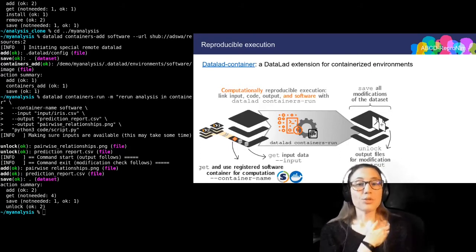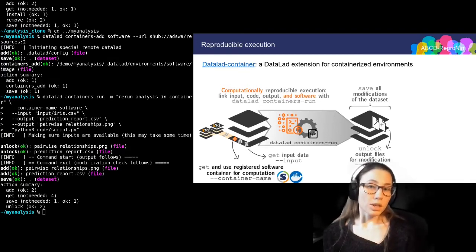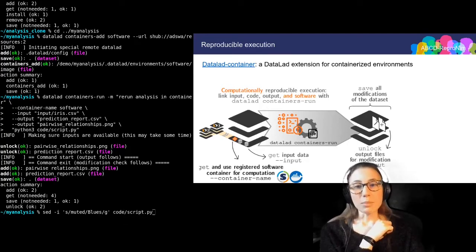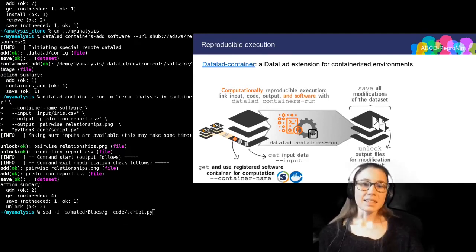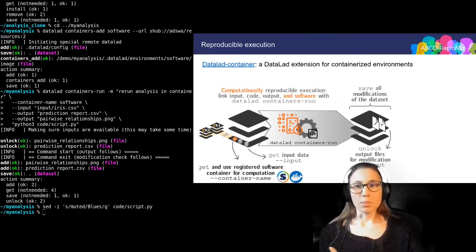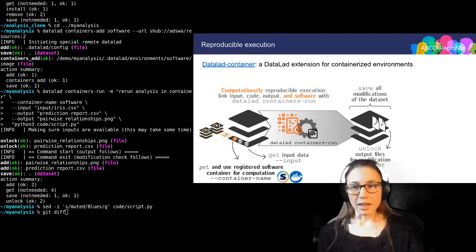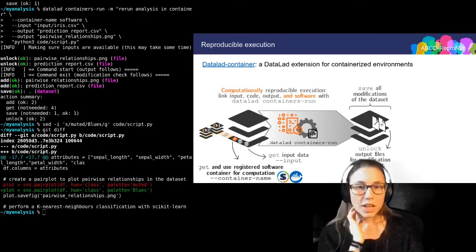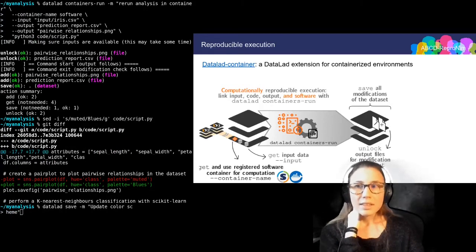But if a change introduces a difference between previous output and recomputed output, then only those files with differences are saved, and then you can use Git tools to investigate the precise difference. As an example, let me update the color scheme of the figure from 'muted' to 'blues'. I'm doing this from the command line again with the stream editor sed. If I take a look at this change, you can see I'm just changing the color palette. And now I can save this change.